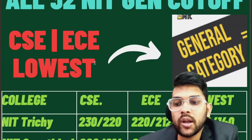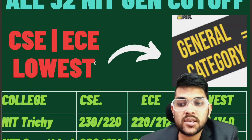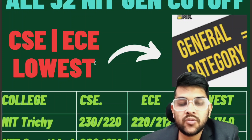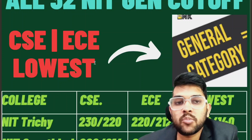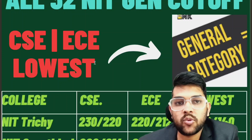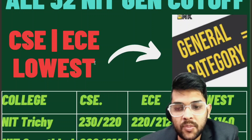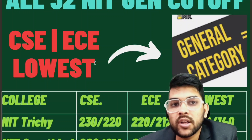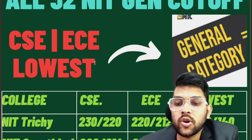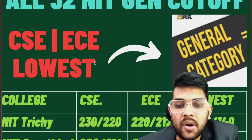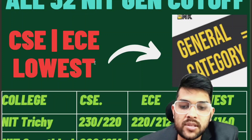First of all, for NIT Trichy, if you are targeting CSC, the safe marks are 230 for male and 220 for female students. All the data I'm providing is for first attempt exclusively — for second attempt I will provide a separate video. These marks are also for other-state status; if you apply as home-state for any college, you can get the same college with a little bit less marks. For EC, 220 and 212 marks are needed, and for lower branches 150 and 140 marks will also work in NIT Trichy, since lower branches are less in demand nowadays.